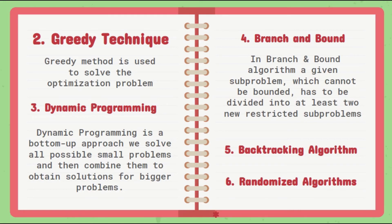The fourth technique is branch and bound. In a branch and bound algorithm, a given subproblem which cannot be bounded has to be divided into at least two new restricted subproblems. Branch and bound algorithms are methods for global optimization in non-convex problems. Branch and bound algorithms can be slow; however, in the worst case, they require effort that grows exponentially with problem size. But in some cases, we are lucky, and the method converges with less effort.